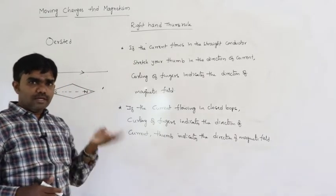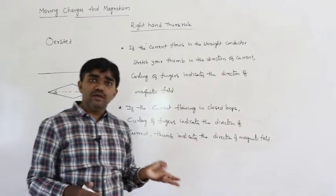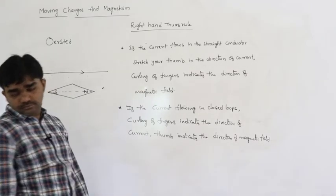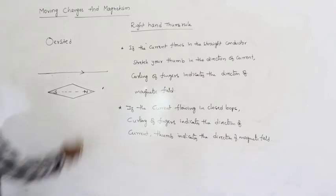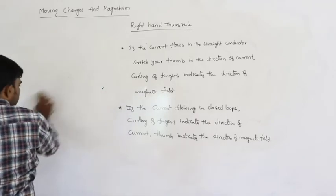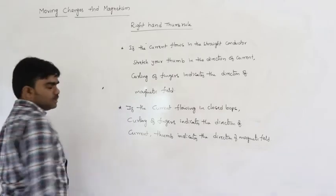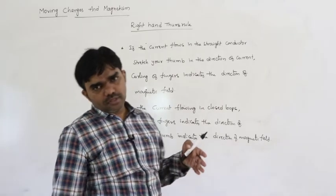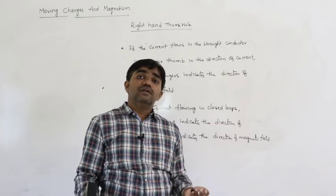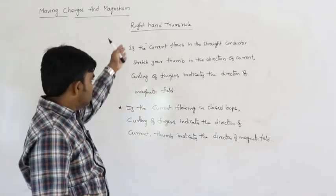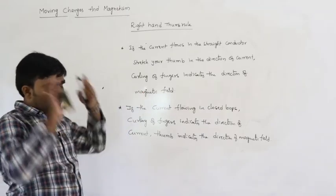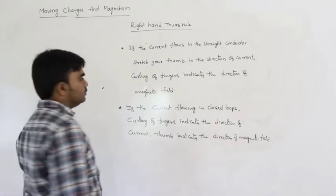For example, if the current flows anti-clockwise, the thumb points upward - meaning the magnetic field is directed upward. If the current flows clockwise, the thumb points inward - meaning the magnetic field is directed inward. In both situations the magnetic field is in opposite directions. These two rules are sufficient to calculate the direction of the magnetic field. Direction is very important because magnetic field and electric field are both vector quantities.